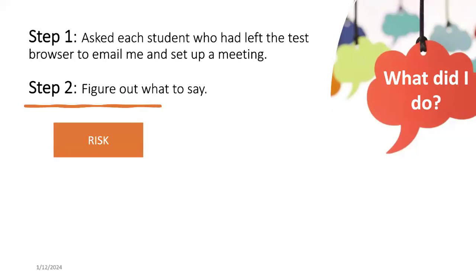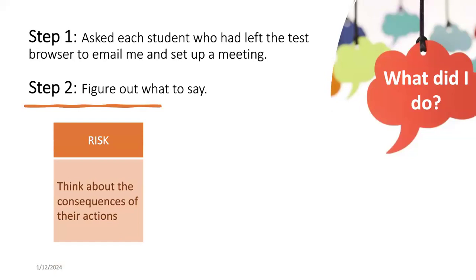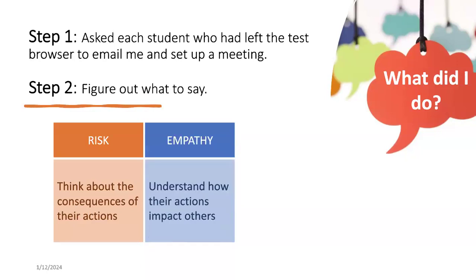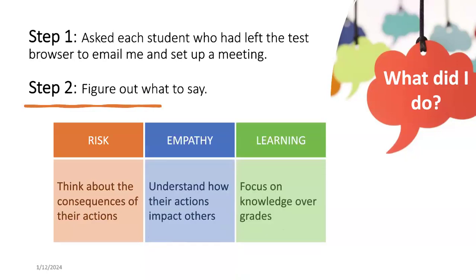I came up with three things. First, I wanted them to understand the risk of their actions—every decision involves risk, and I wanted them to understand: you made this decision during the exam, what risk did you take on? Think about the consequences. Second, I wanted to enforce empathy because I was personally struggling with their actions. I wanted them to see that their actions affect others, that I care about them, and I wanted them to hear my perspective. The last thing was the learning element: I wanted to focus on knowledge over grades. University is a bubble, totally separate from the real world, and there's a massive difference between grades and knowledge.